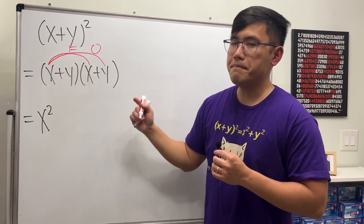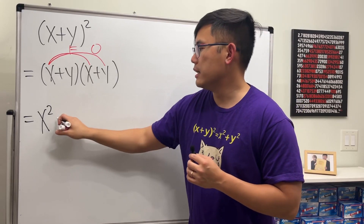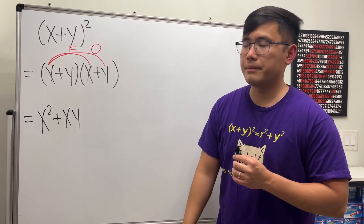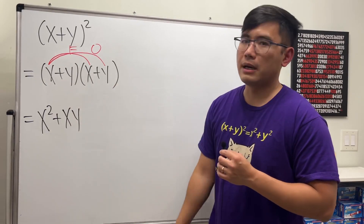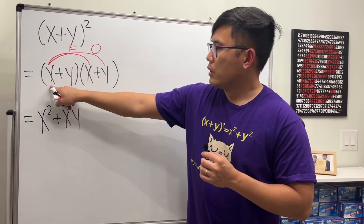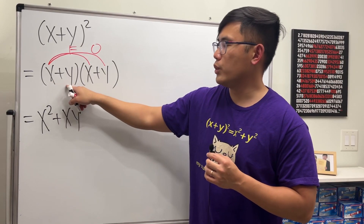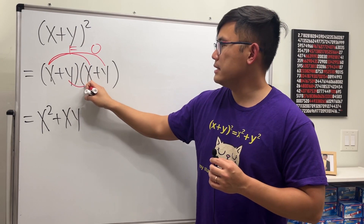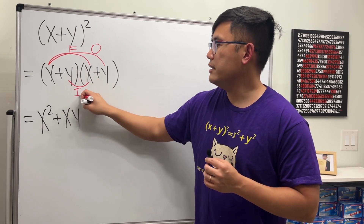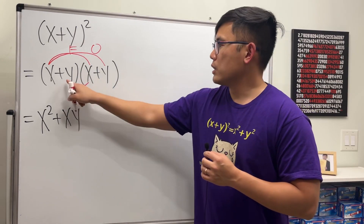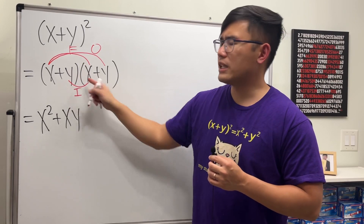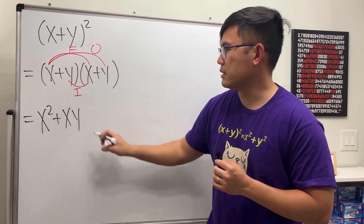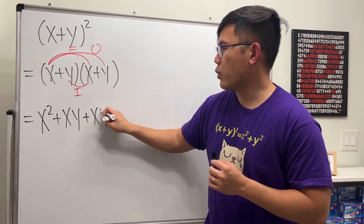x times y is just xy, because in algebra when you put x and y together it means they are multiplying, and we're adding because they were both positive. Now we move to the y — the Inner terms. y times x is the same thing; the order of multiplication doesn't matter, so we write xy again.